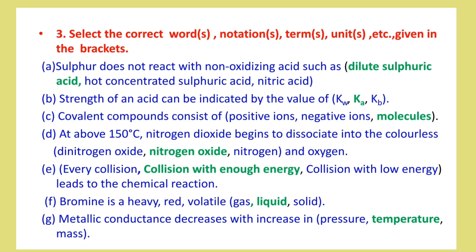F: Bromine is a heavy red volatile liquid. Bromine and the halogens — in the liquid state. Solid state, and fluorine and chlorine are in the gaseous state.